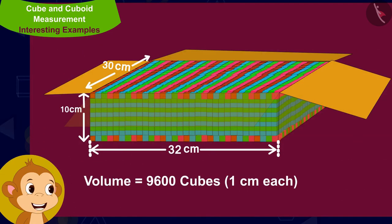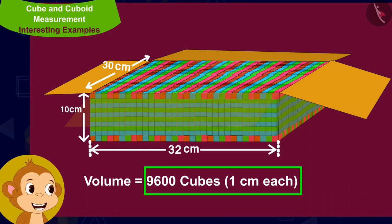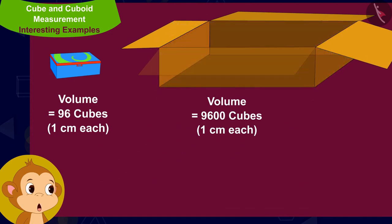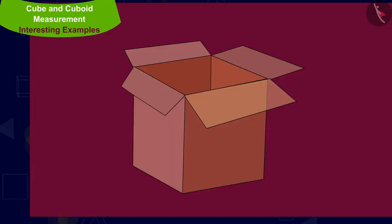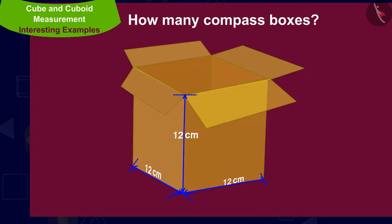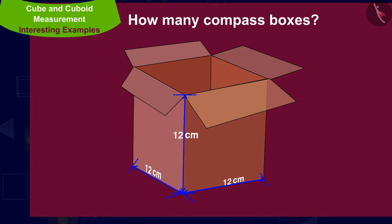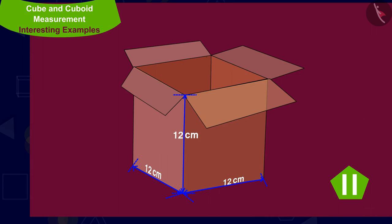The volume of a compass box is 96 cubic centimeters and the volume of this cuboid shaped box is 9600 cubic centimeters. Therefore, 9600 divided by 96 equals 100 — so 100 compass boxes will fit in this box. Now, children, if the edges of Bubble's cube shaped box are 12 centimeters each, can you tell how many compass boxes Bubble will be able to keep in this box? You can find the solution by pausing the video.